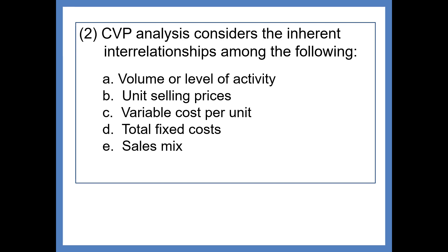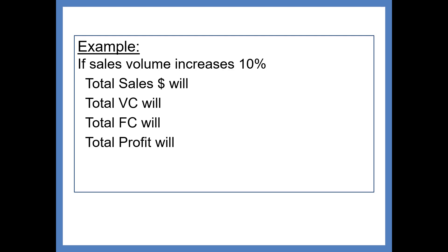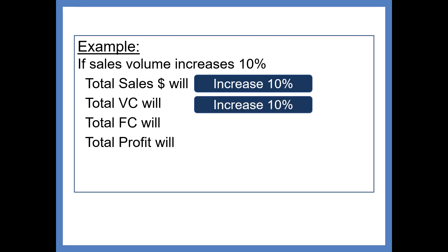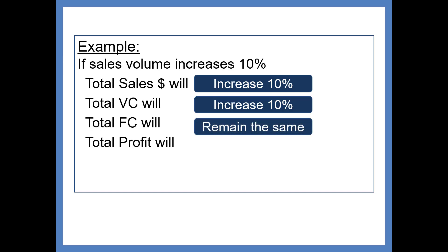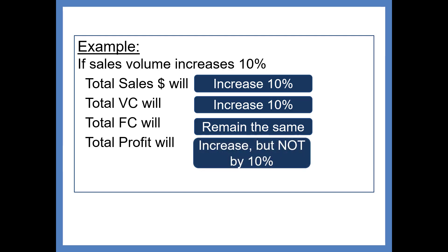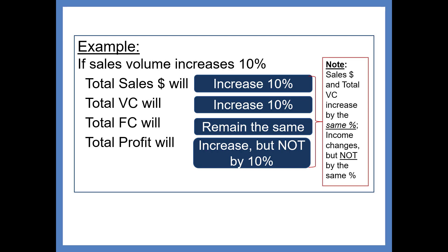What we mean by inherent relationships is that things will have an effect whether we want them to or not. For example, if sales volume increases by 10%, holding all other variables constant, total sales dollars will increase by 10%. Likewise, total variable cost will increase by 10%. By definition, total fixed cost will remain constant and total profit will increase, but not by 10%.